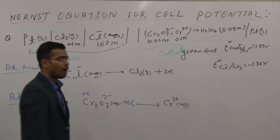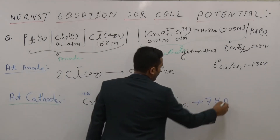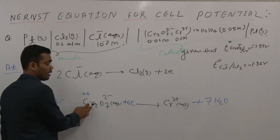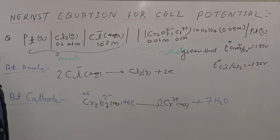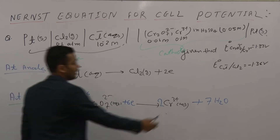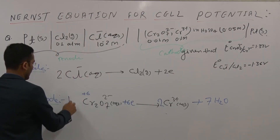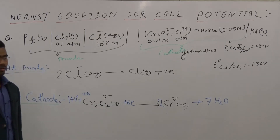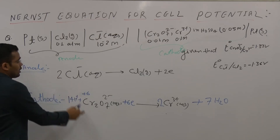Now balance the oxygen: there are 7 oxygen atoms, balanced by adding 7 moles of water on the opposite side. Then balance Cr: there are 2 Cr on the left, so write 2 Cr³⁺ on the right. Then balance hydrogen: 14 H atoms from 7 H₂O, so add 14 H⁺ on the left. Everything is now balanced. This is the balanced cathode half-cell reaction.